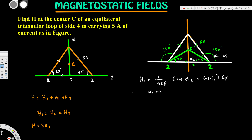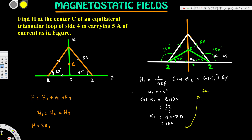Alpha two is 30 degrees, so cos α2 equals cos 30° which is √3/2. Alpha one is 180 minus 30, which is 150 degrees, so cos α1 is negative √3/2. To find ρ, we use tan 30° equals ρ divided by 2, therefore ρ equals 2·tan 30° which equals 2/√3.